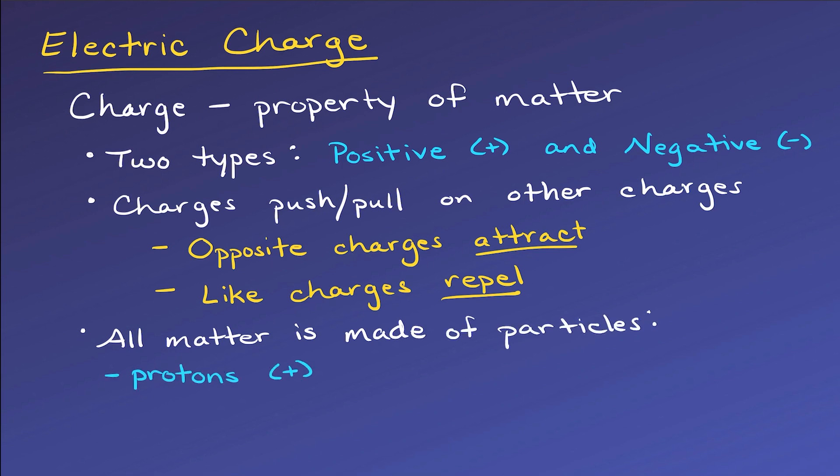Protons are positively charged, and electrons are negatively charged, while neutrons are electrically neutral, so they have no charge.